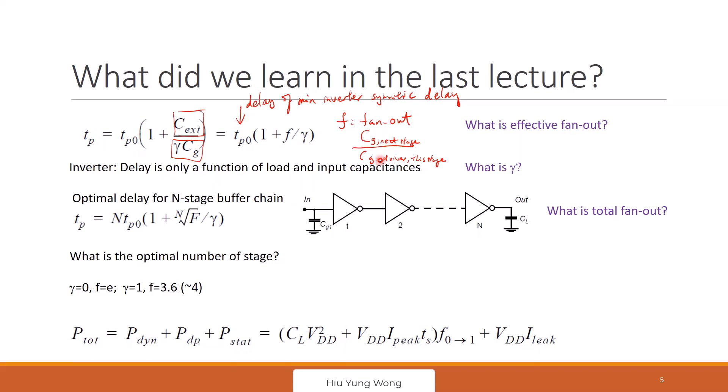When we talk about fan out, we immediately think about the next stage gate and the previous stage gate. It tells you about the size: if the next stage inverter is twice as large as the driver, then the fan out is two — meaning you are driving two of yourself. If your fan out is four, you are driving four of yourself. This way you won't get confused. You have the insight and can tackle more complicated problems.